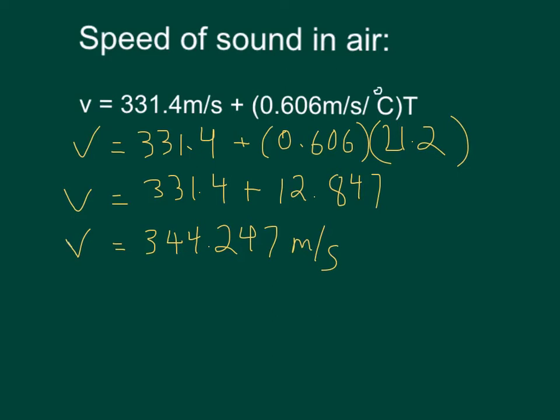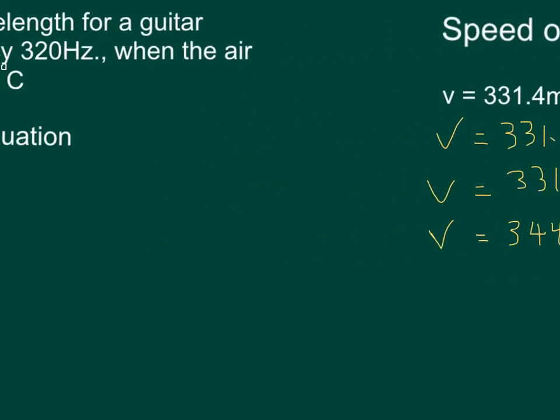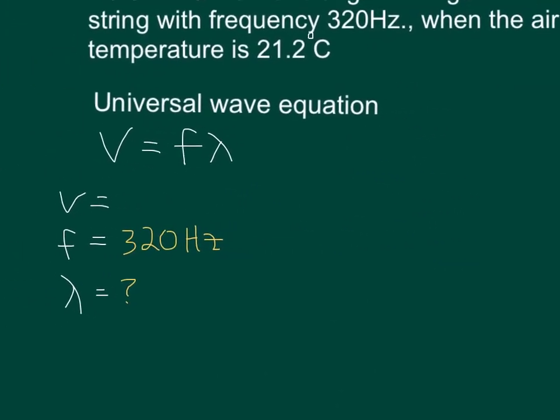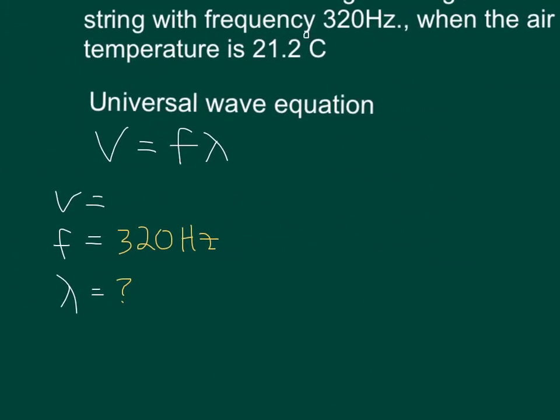So there's our speed of sound in air. So if we go back to our original information, where we have V written down, we can now write 344.247 meters per second.